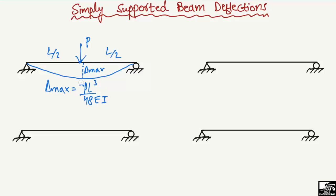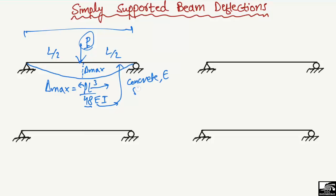Here, P is the point load, L is the total length of the beam, and 48 is the constant. E is the modulus of elasticity of the beam material — we use the E of concrete, steel, aluminium, etc., depending on the material. I is the moment of inertia of the beam section: for a rectangular beam, I = BH³/12; for a circular beam, the circular moment of inertia is used. I depends on the geometry of the beam cross-section.